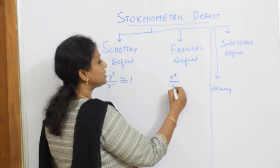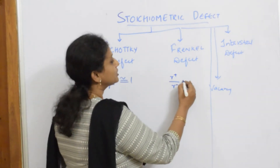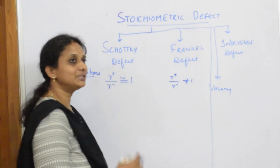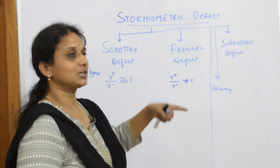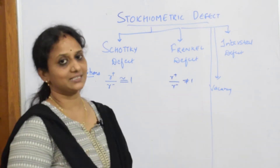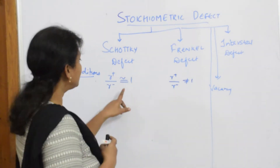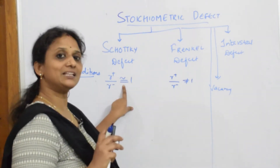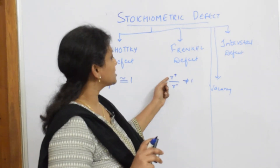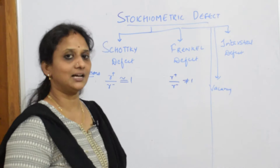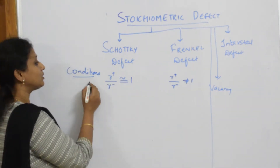For Frenkel defect, the ratio of the cation radius to the anion radius is not equal to one. We very well know the cation is smaller than the anion. So if it is not approximately equal to one — just to help you memorize for the exam — here the cation is smaller and the anion is larger in size. Such compounds show Frenkel defect.